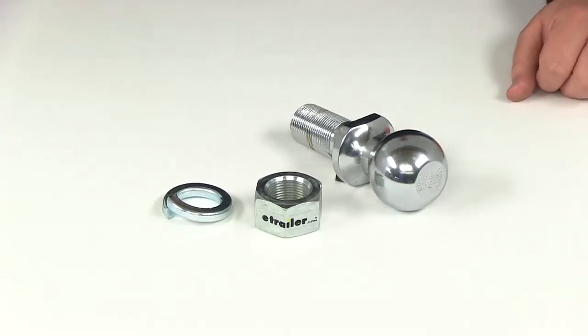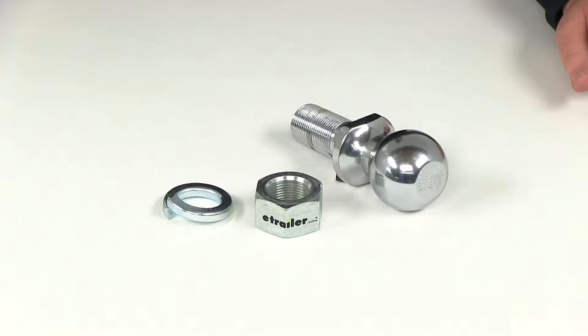Today we're going to be taking a look at part number A-6. This is the Curt 2 5/16th inch trailer hitch ball.